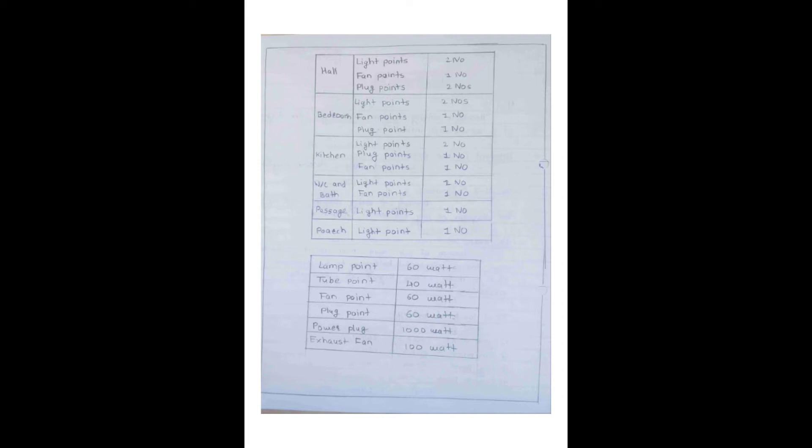In the kitchen, one light point, one plug point, and one fan point. Lamp point is 60 watt, two point is 40 watt, fan point is 60 watt, plug point is 60 watt, power plug is 1000 watt, and exhaust fan is 100 watt.